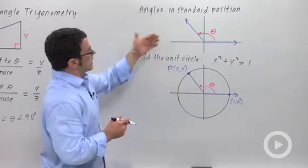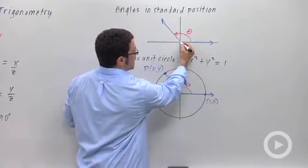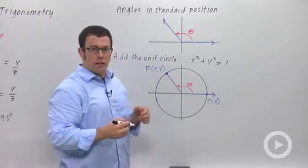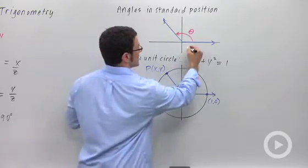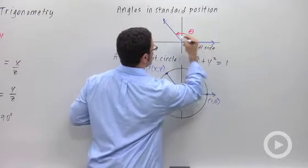This is what an angle looks like in standard position. In standard position, you draw the angle so that its vertex is on the origin in a coordinate plane. This is the initial side. This is the terminal side.